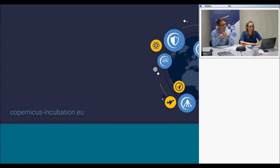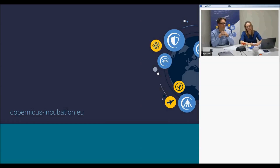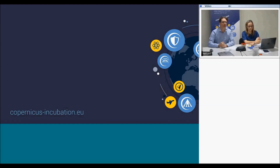Another question: are there other options for a second team member, maybe a partner company? We need at least two complementary profiles, but we don't really foresee applications from consortiums — two different legal entities coming together. Another question: how does the Copernicus Incubation funding match with other funding programmes, for example ESA BIC funding? Yes, it is compatible with ESA BIC funding. We are looking specifically for applicants that have a challenge with the current ESA BIC funding — for example, some programmes require a specific location, whereas this funding is location-free. In that sense, it is complementary.